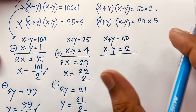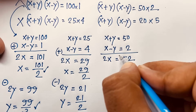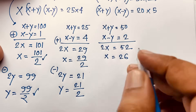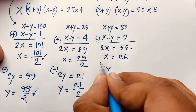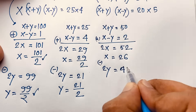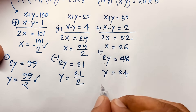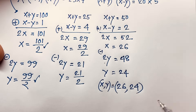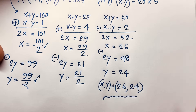For Case 2: adding both equations gives 2x = 52, so x = 26. Subtracting gives 2y = 48, so y = 24. Both are natural numbers, so this is a valid solution. We find x = 26 and y = 24.